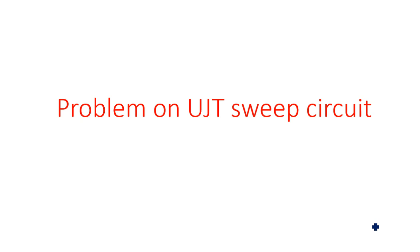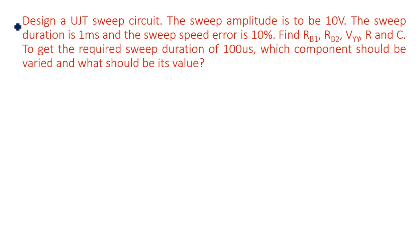In this video we are going to learn about the designing of a UJT relaxation oscillator or sweep circuit with some given parameters. Design a UJT sweep circuit with these specifications: the sweep amplitude is 10 volts, the sweep duration is 1 millisecond, and the sweep speed error ES is 10%. Find RB1, RB2, VYY, R, and C. RB1 and RB2 are UJT resistors at base 1 and base 2 respectively.